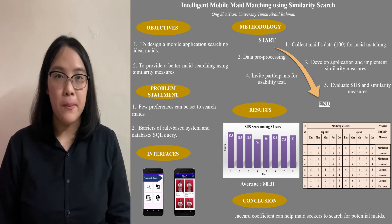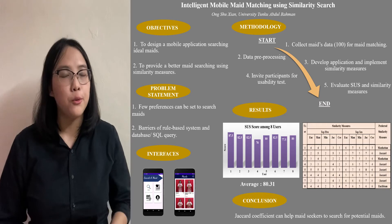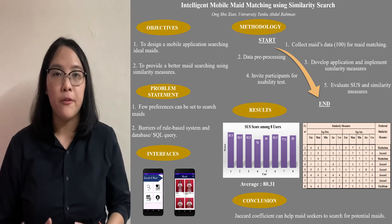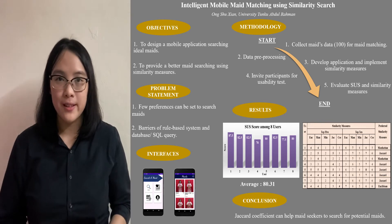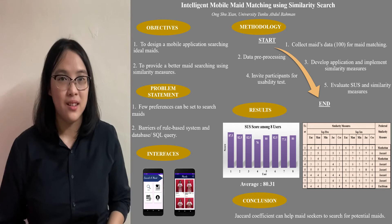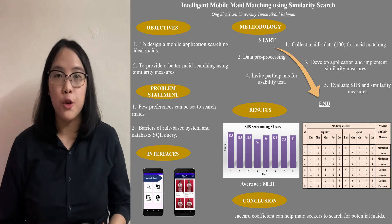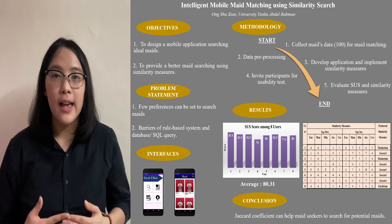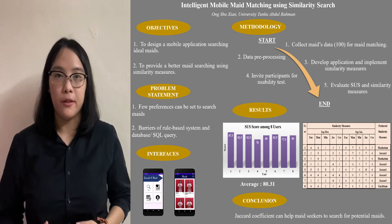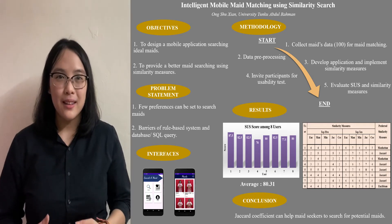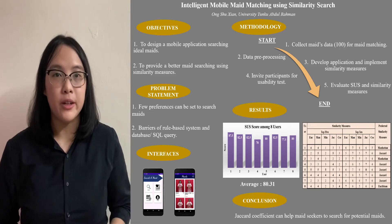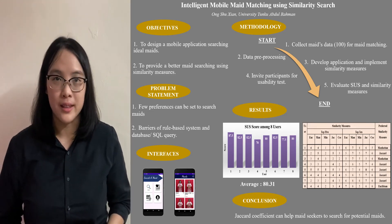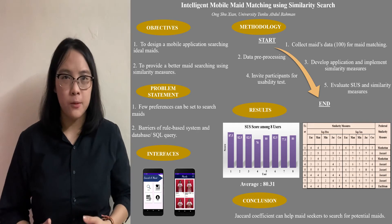If using simple matching, the application may show no results when the user preferences are totally different from the maid data. Using the similarity measure, for example Euclidean Distance, this application will show results as similar as possible to the user preferences. The maid profiles will be sorted according to the similarity values in descending order.